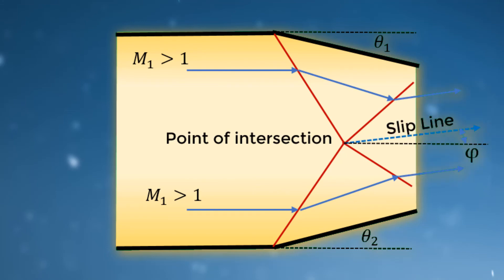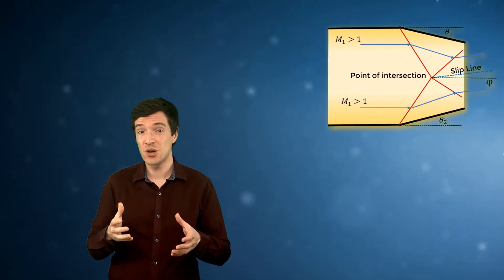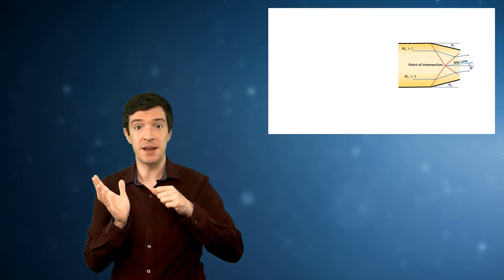The flow direction past the intersection point is the same and parallel to the slip line. It is possible to estimate the shock angles and the flow properties past the intersection based on what we know about the slip line.